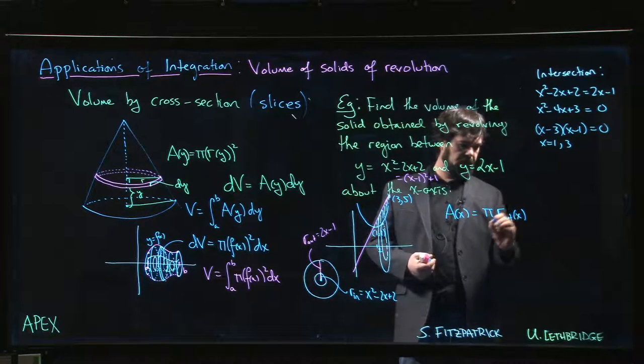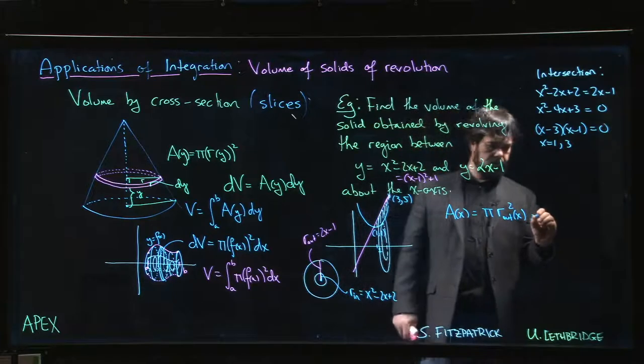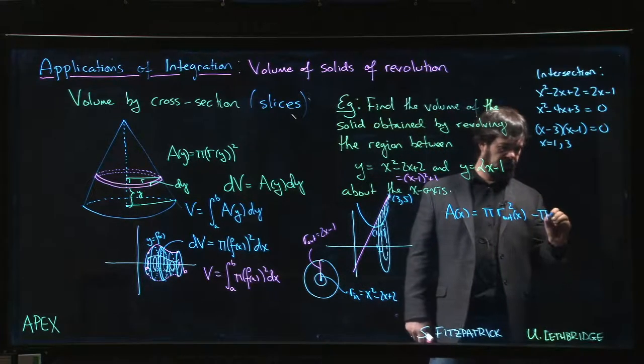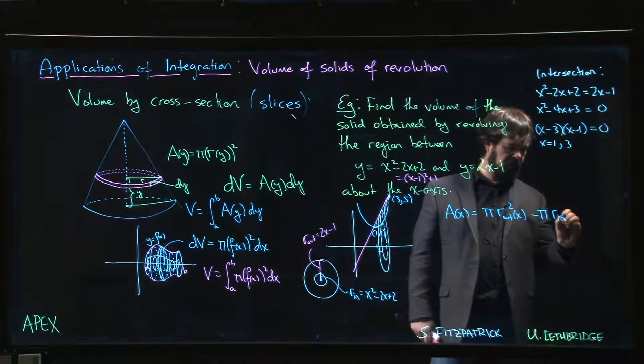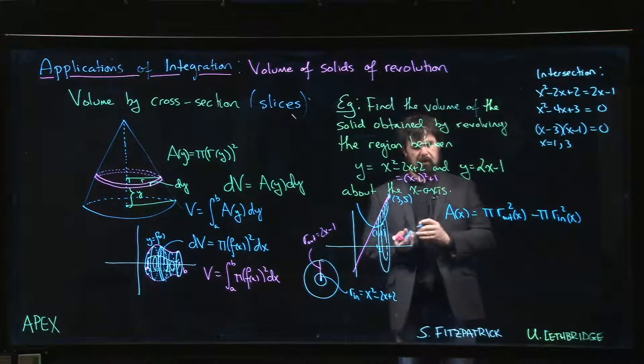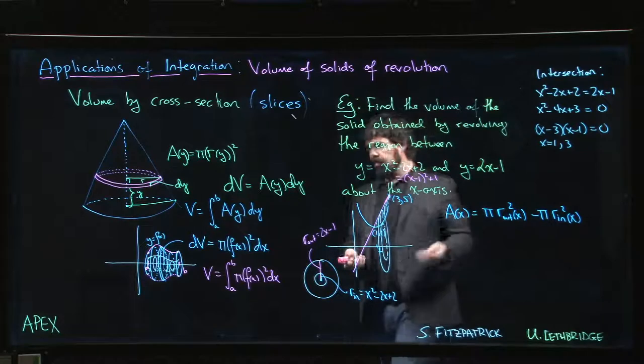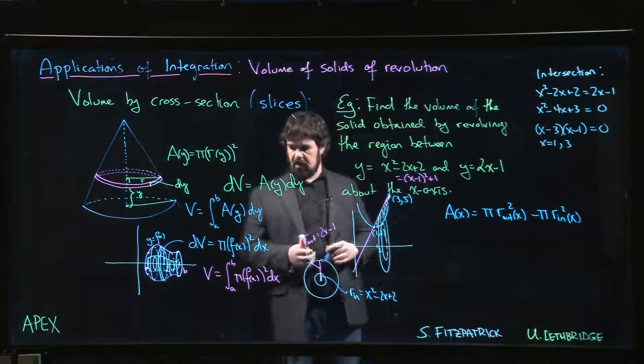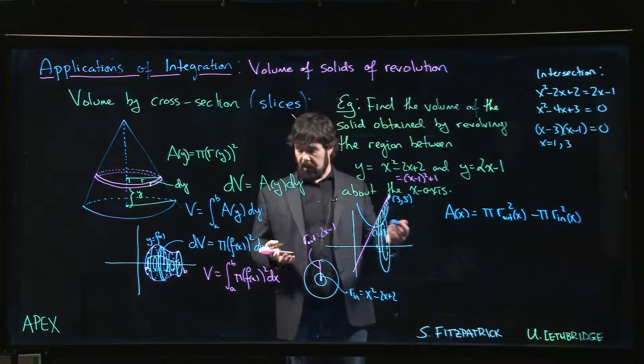So my area as a function of x is going to be the area of the outer disk, so we can think of that as being a function of x, we square it, minus the area of the inner disk, so inner radius squared. And then it's still going to be true that the volume is area as a function of x integrated with respect to x.